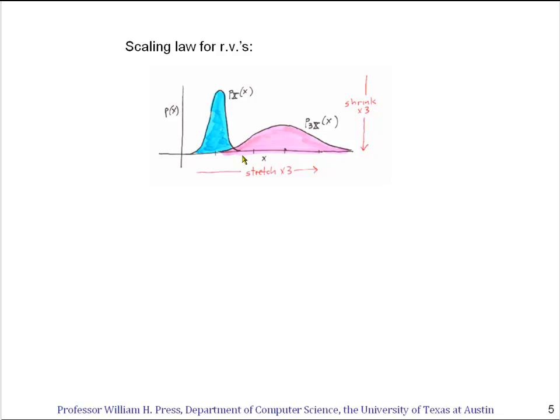What is the probability distribution of a different quantity, 3 times x? Well, if this is centered around 1, then p of 3 times x obviously has to be centered around 3. In fact, if you think about it for just a second, you'll see that it's got to be the same functional shape, however stretched by a factor of 3.